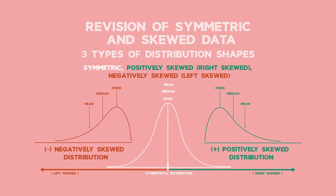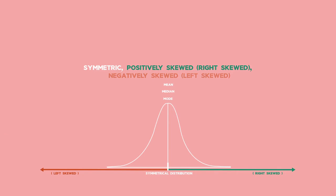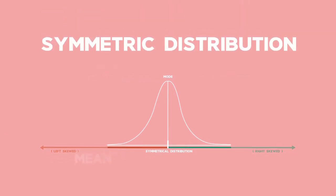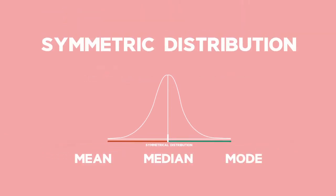In a symmetric distribution, the mean, median and mode of the data set are approximately equal. The tails of the distribution are roughly the same length.